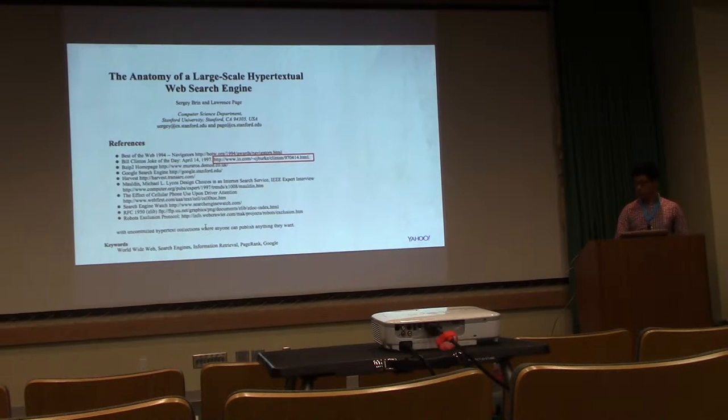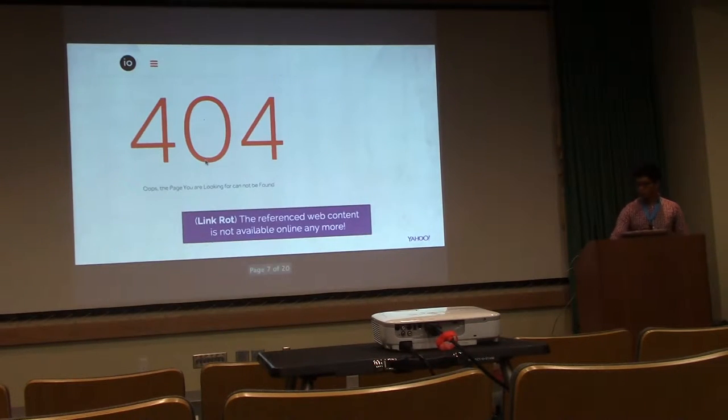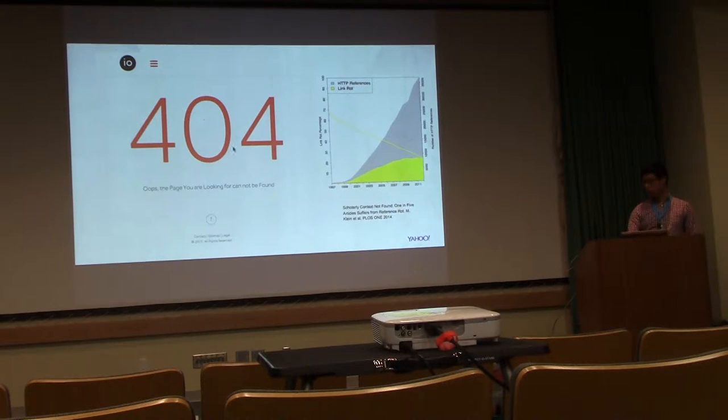Just take another example. There are more links in the reference section. When we click this link, we found there is a 404 error, which means that the referenced web content is actually not available anymore online. We call this the link rot problem. This is more severe than our previous case because we haven't got any information at all. To get a bigger picture, the x-axis is the chronological order of publication, the y-axis is the link rot percentage. Looking at this yellow line, you can see that, not surprisingly, as the publication date is closer to the present, the link rot rate is decreased. But still, we found it ranges from 25% to 65%, which is a really big percentage.